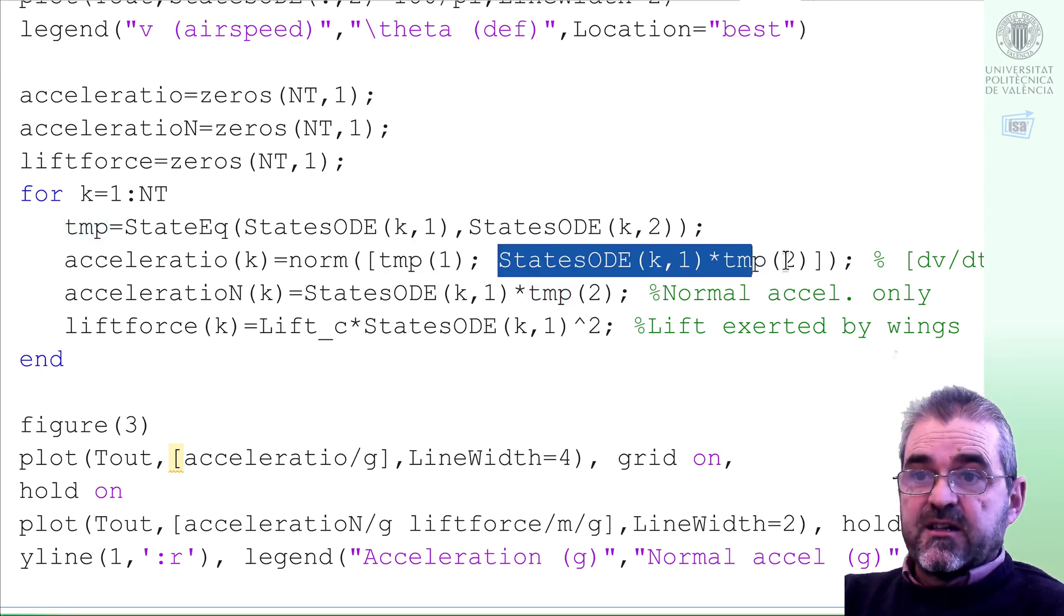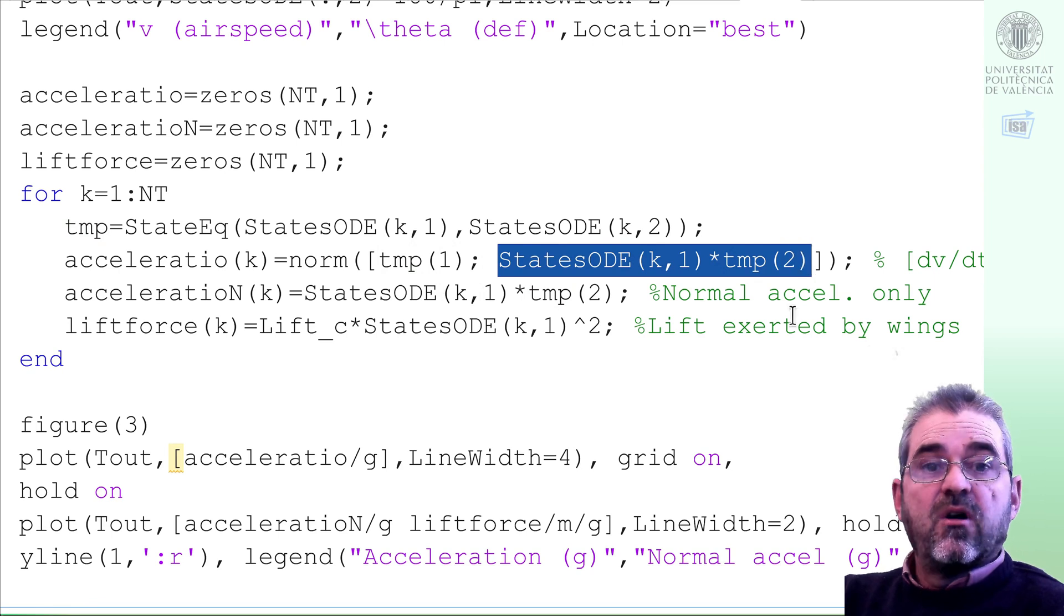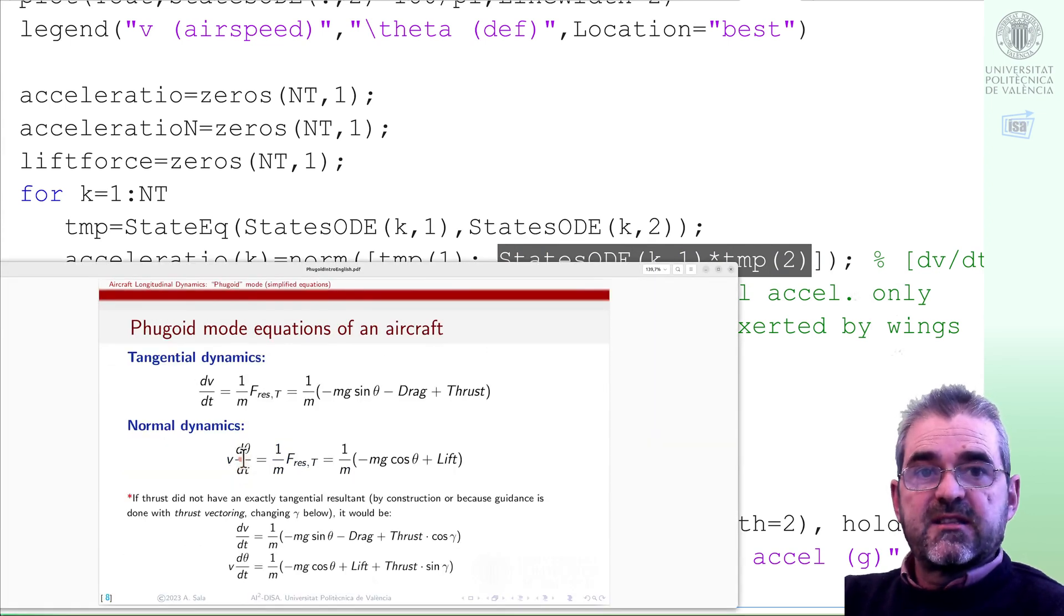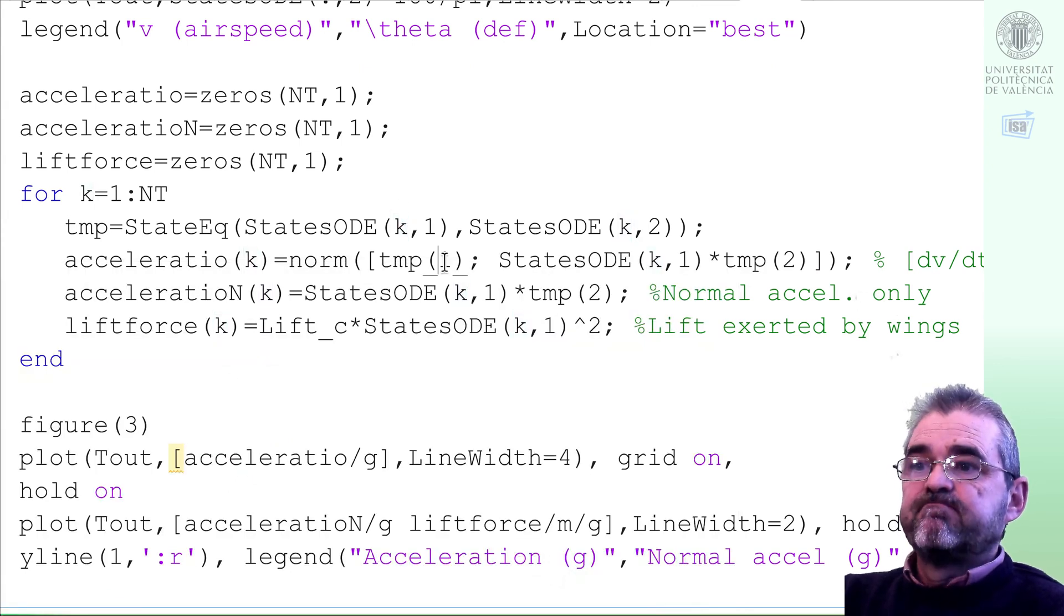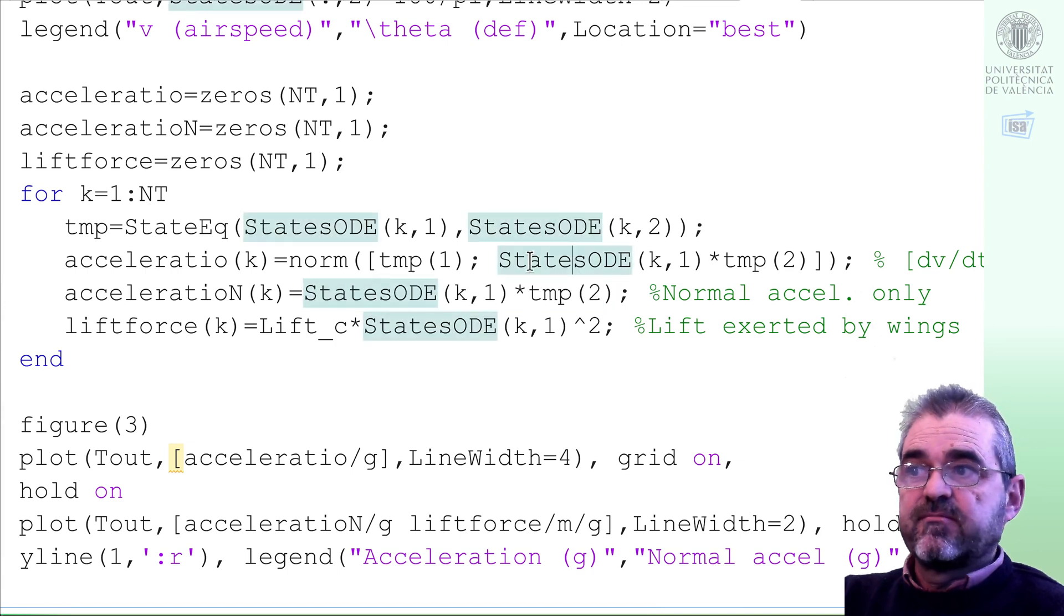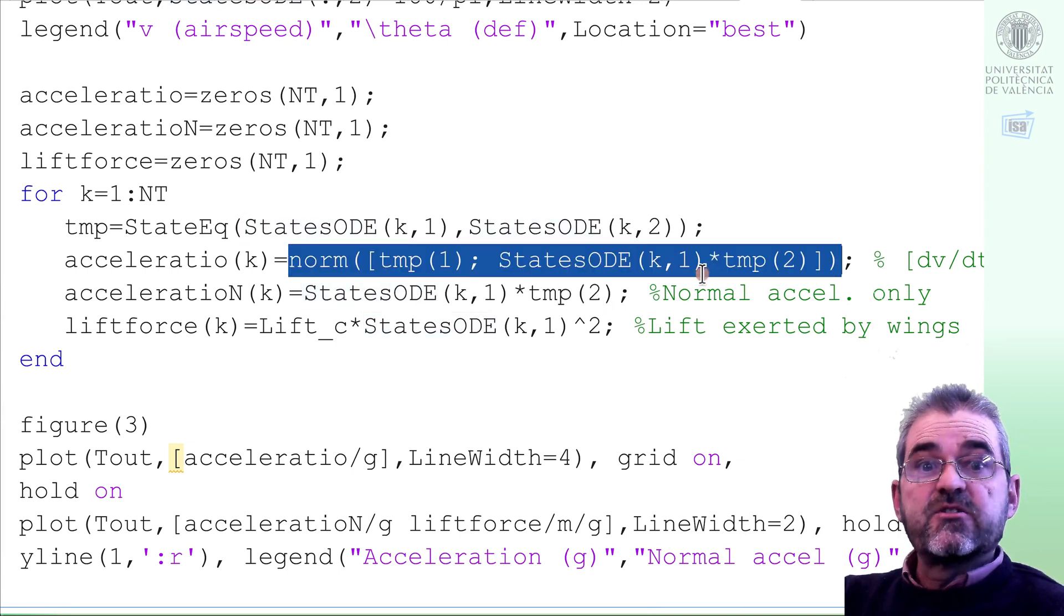And the normal acceleration is the product of linear speed, the first simulated state, times the angular velocity, which is the output of the second state equation. It is this product, the thing that is equal to the normal acceleration. Well, so, if I store this, I will get only the normal acceleration. And if I store the whole acceleration vector's norm, then I will get the acceleration in a plot.